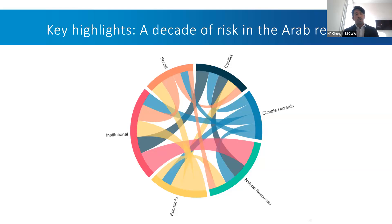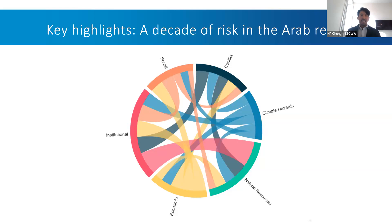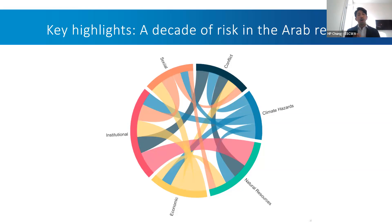This graph shows the six dimensions as well as the interconnectivity of risk between them. Each ribbon represents the number of countries that are at high or very high risk across the different dimensions. From this chart, we can clearly see that risk in the region does not happen in a vacuum — many countries who have institutional weakness also share other vulnerabilities and lower resilience across different risk dimensions.